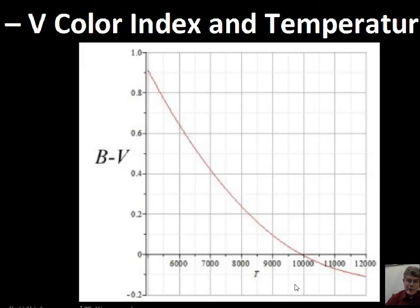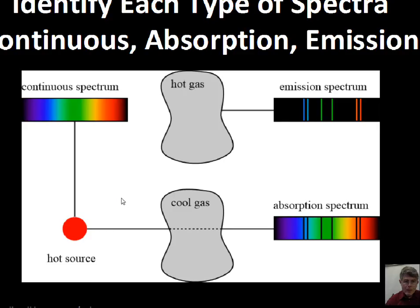Again, high temperature here off to the right. The B minus V is zero, roughly around 10,000 Kelvin for the surface temperature. Again, the sun is about 5,800 Kelvin. So it's up here, maybe it's 0.68 for its B minus V. Don't quote me on that, but it's a positive value.